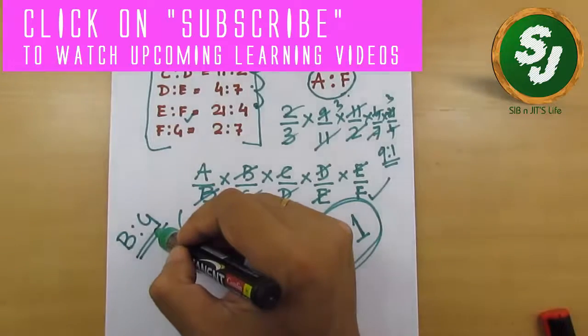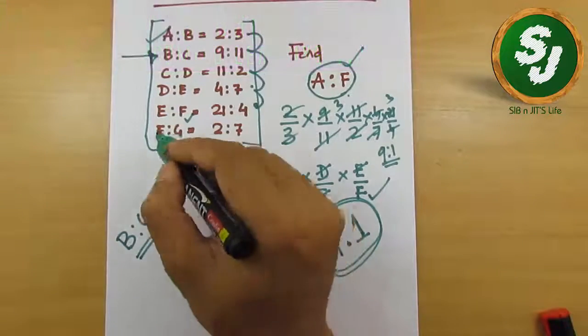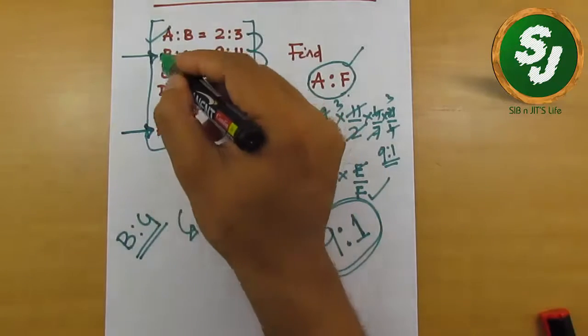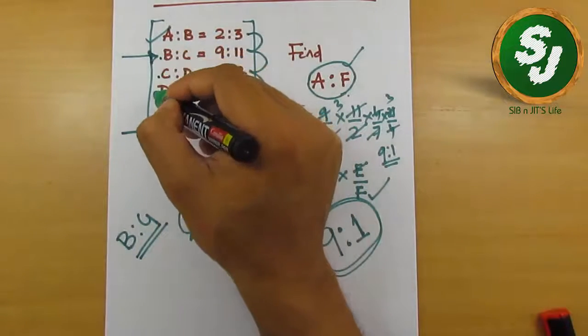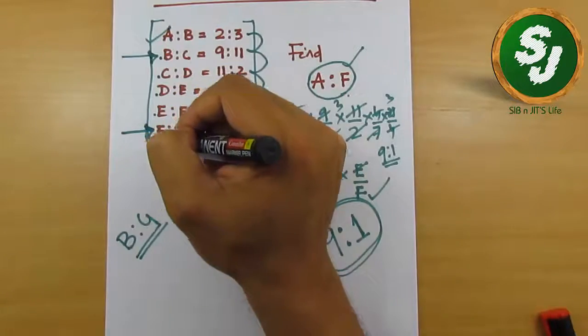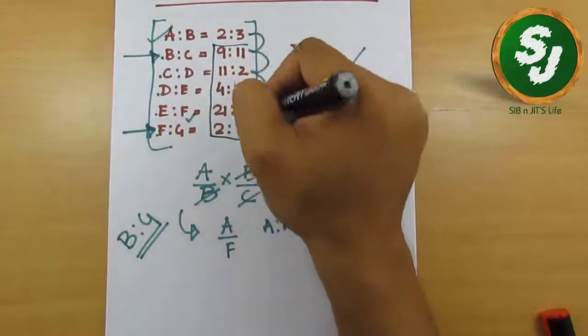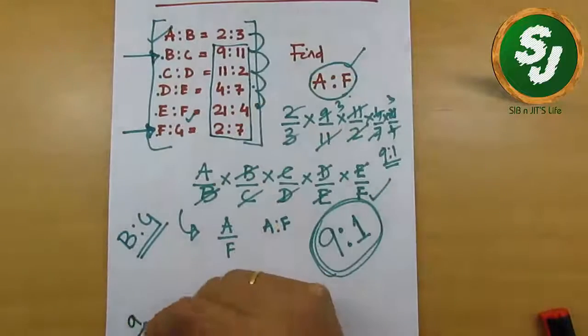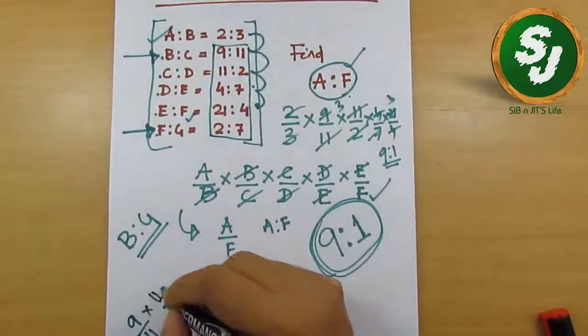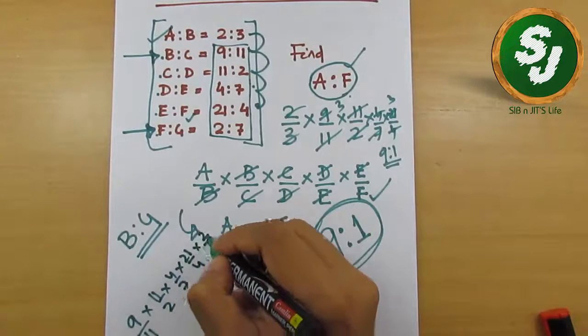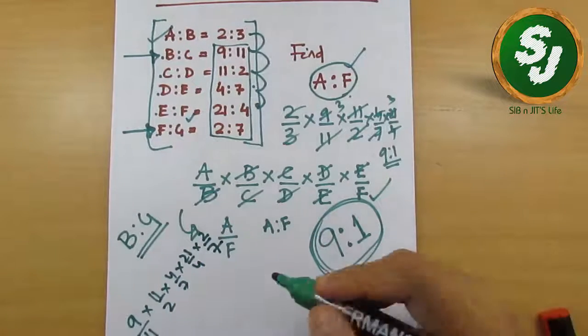So here, this is the ratio which is ending at G. So I have to multiply, starting from here, all the ratio parts one by one, and I will get B/G. So all these numbers I will have to multiply with each other: 9/11 × 11/2 × 4/7 × 21/4 × 2/7.